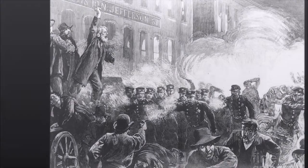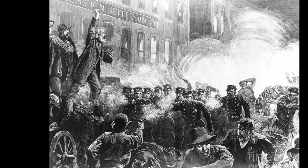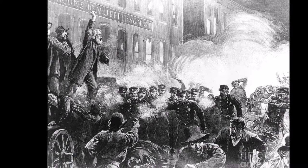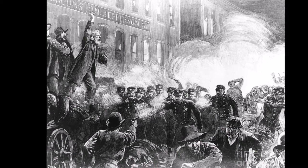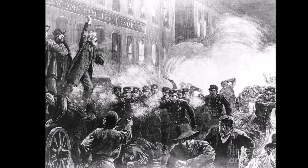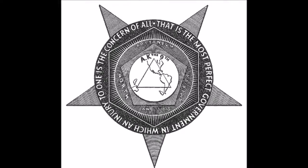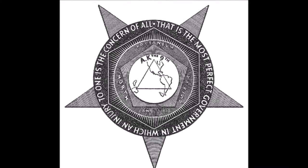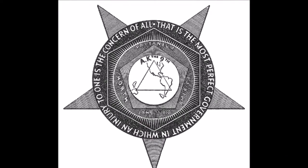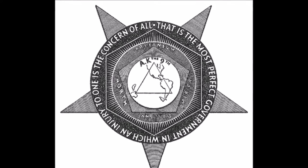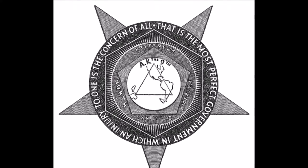The Haymarket Square Riot of 1886 is a labor protest rally in Chicago that turned into a riot when someone threw a bomb at the police. The Knights of Labor were blamed for this riot and the radical labor activists were convicted. It became a major setback for the labor union movement.